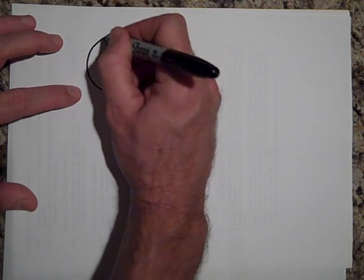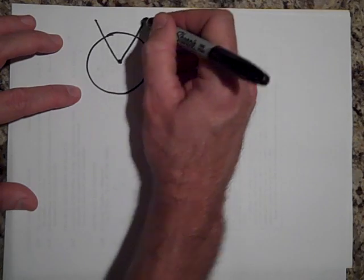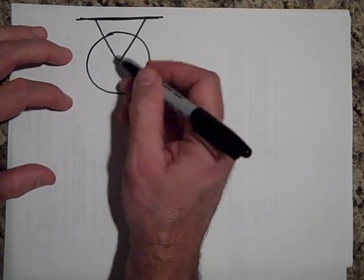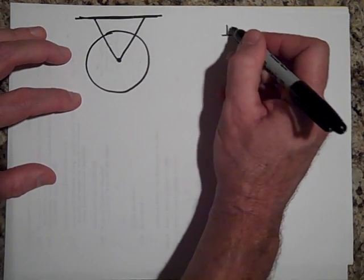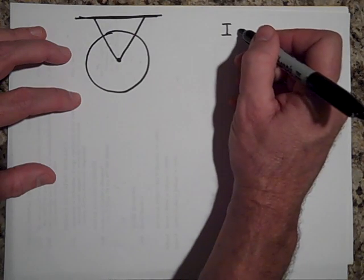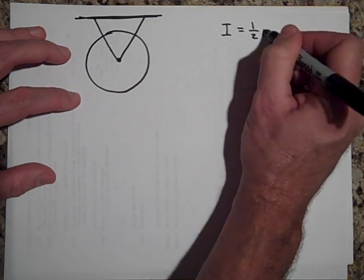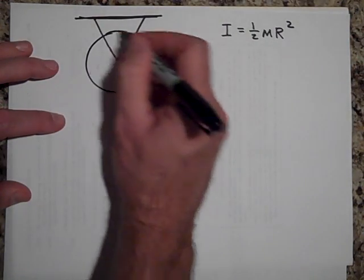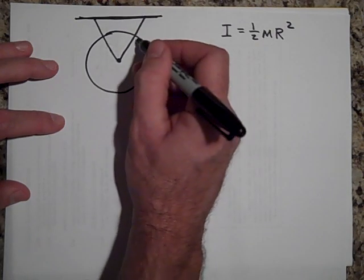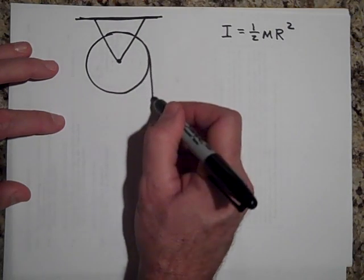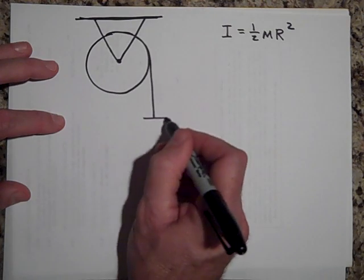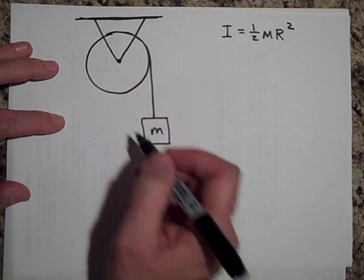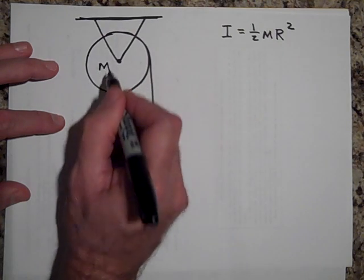Now this is a cylinder, a solid cylinder, and I for a solid cylinder is going to be one half MR squared. We are going to wrap a string around here several times and then it's going to come off and there's going to be a bucket of mass M here. Let's say the wheel is also mass M, so they're the same mass.